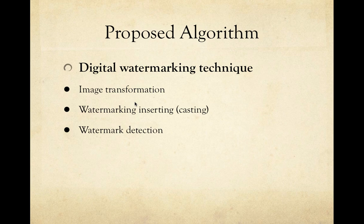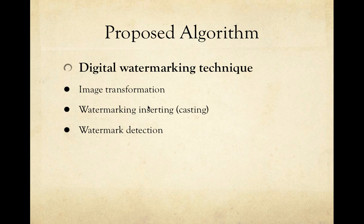The watermark should be converted into a binary image so that it is easy to embed. To insert the watermark into the image, some DCT coefficients need to be modified according to watermarking rules. In this project, I chose the mid-frequency band coefficients in the transform domain. The reason is that high-frequency coefficients are easily eliminated by filtering, and low-frequency coefficients might suffer from imperceptibility issues.